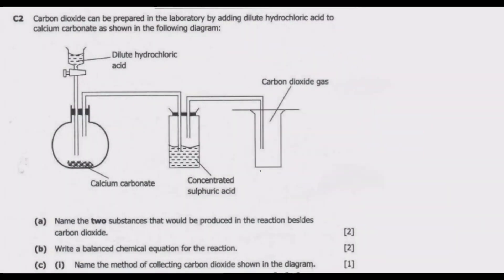Welcome viewers to another episode on ASUG 12 exams. In this episode we continue looking at section C of the 2021 internal science paper 2. Let us look at question C2: carbon dioxide can be prepared in the laboratory.